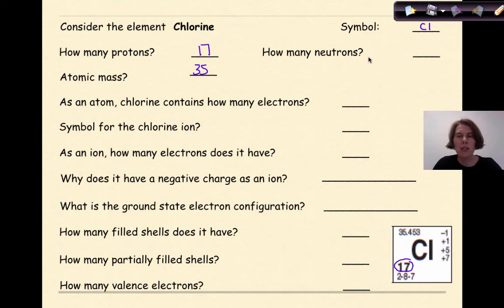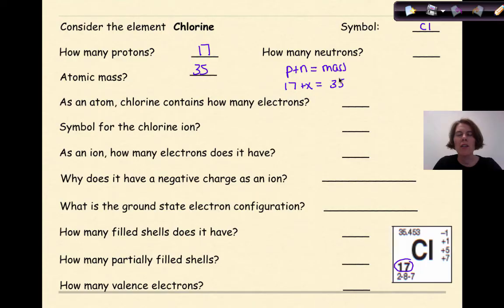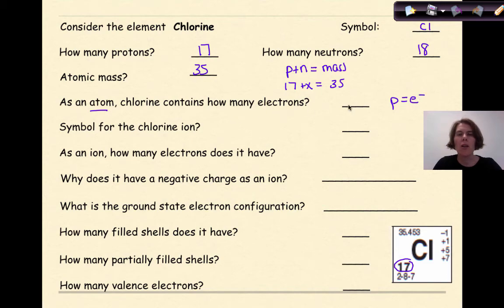How many neutrons does chlorine have? Protons plus neutrons gives the mass number. So if protons is 17 and mass number is 35, solving for neutrons gives 18. As an atom, chlorine contains how many electrons? If it's an atom, the number of protons equals the number of electrons, so a chlorine atom has 17 electrons.